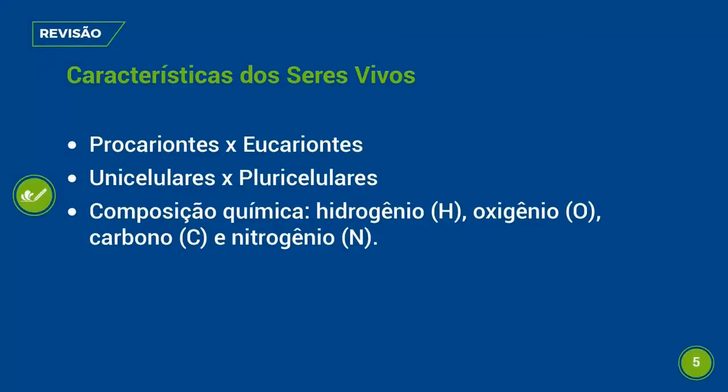A professora Sabrina apresentou várias características dos seres vivos. Entre essas características, ela mostrou a diferença entre as células procariontes e eucariontes. A professora apresentou como exemplo das células procariontes as células presentes nas bactérias. A principal diferença é que nas células procariontes não temos membrana nuclear — o material genético se encontra disperso no citoplasma.